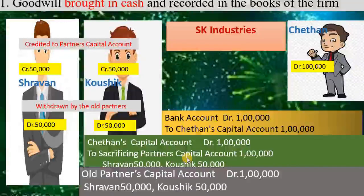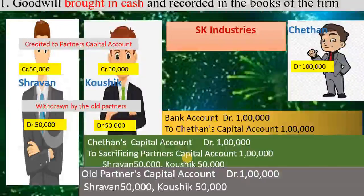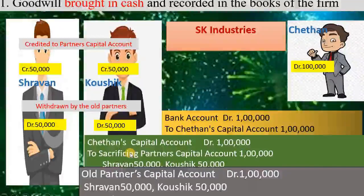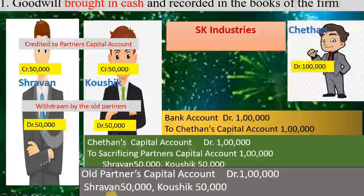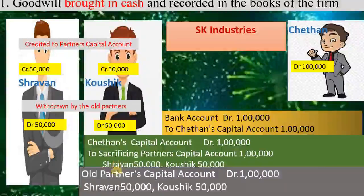So you should remember these 3 transactions. First: cash brought into firm — bank account debit to new partner's capital account. Second: goodwill distribution — new partner's capital account debit to old partner's capital account. Third transaction: if goodwill is withdrawn by the old partners — old partners capital account debit to bank account.